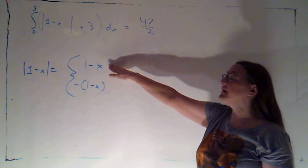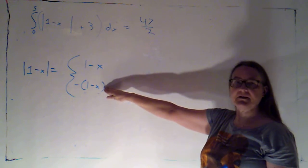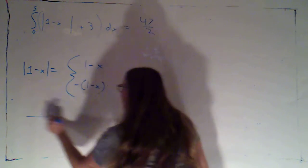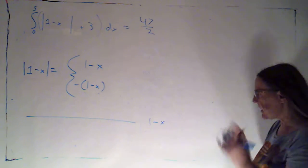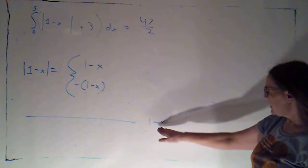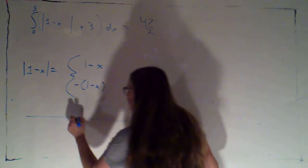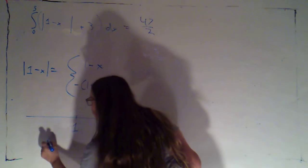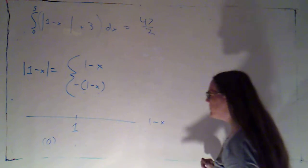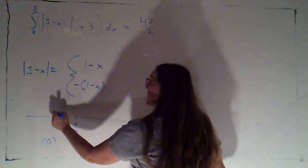So that means I need to know the sign of 1 minus x. So I create myself a number line, pretty easy to see that that's going to be 0 if x is equal to 1. If I plug in a number smaller than 1 like 0, 1 minus x would be positive.